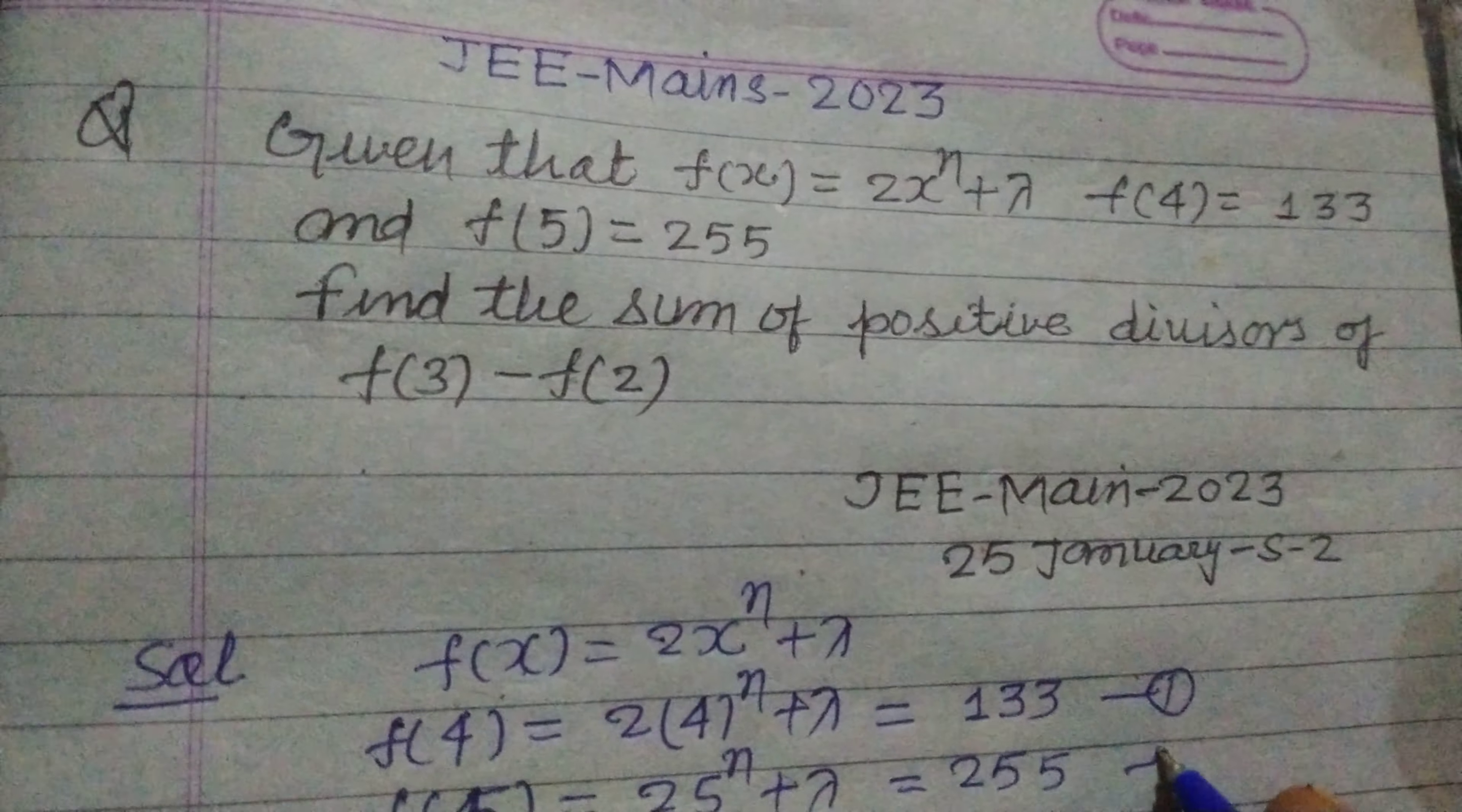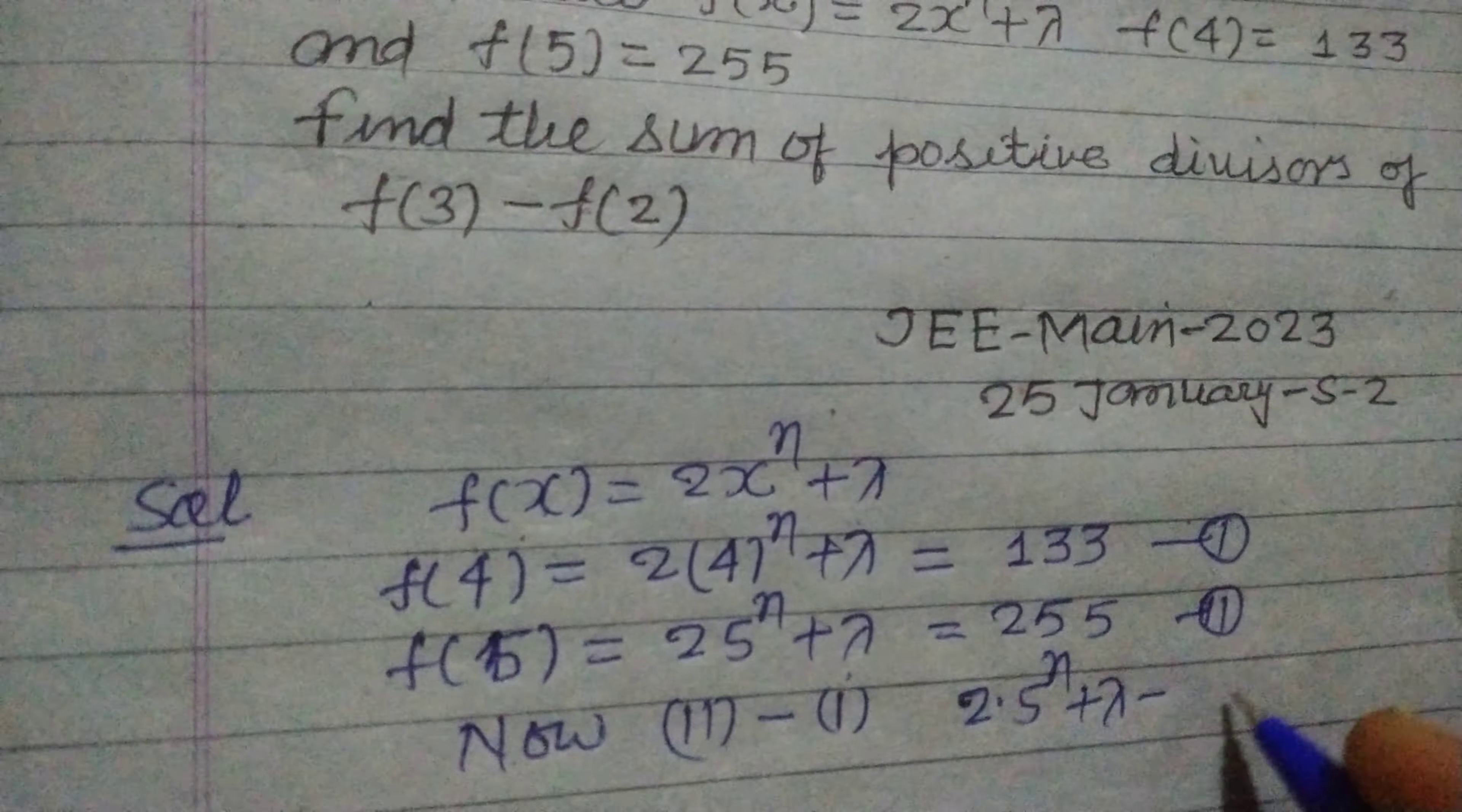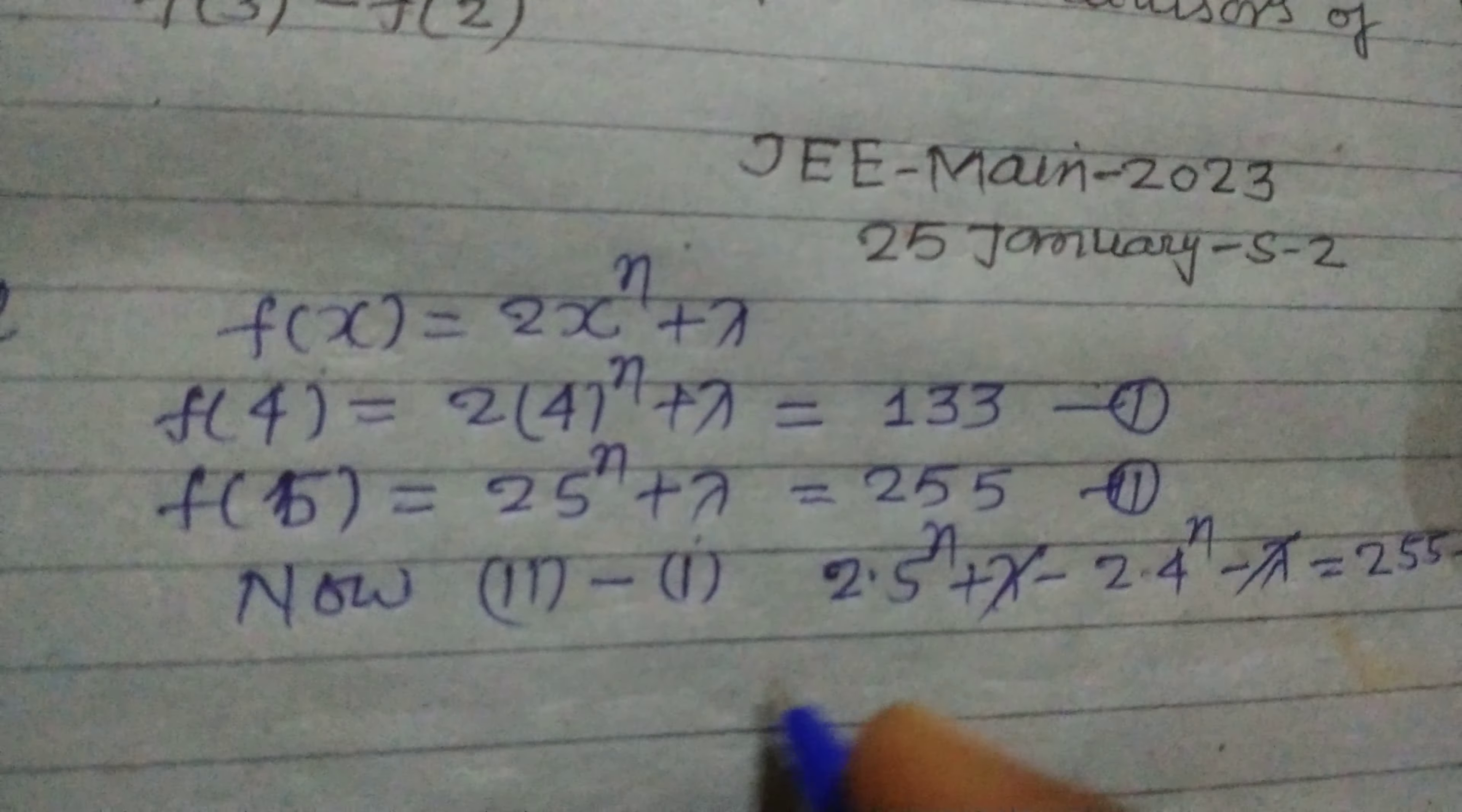This is our first and this is our second equation. Now, if we subtract second minus first, then we get 2 × 5^n + λ - 2 × 4^n - λ = 255 - 133. This lambda cancels, we get 2 common.